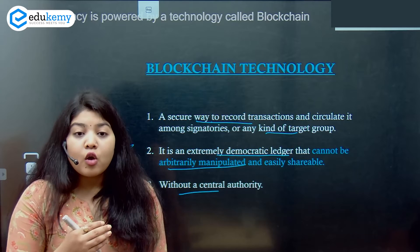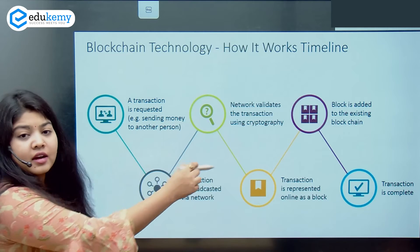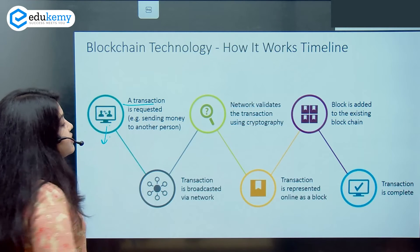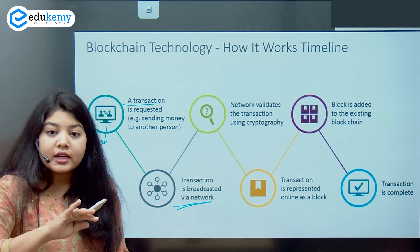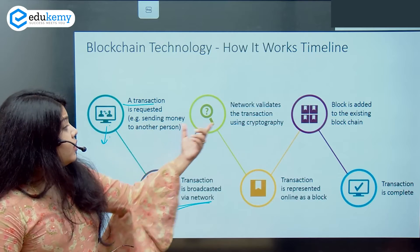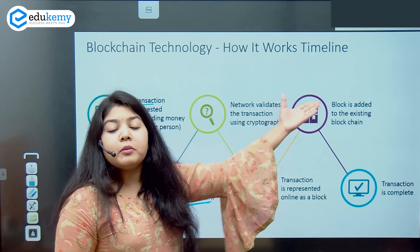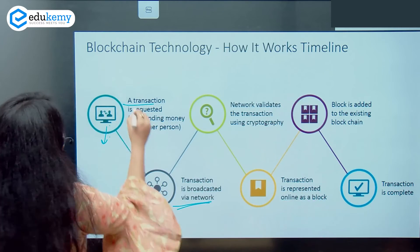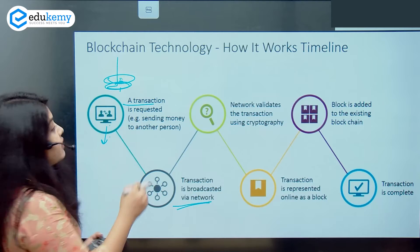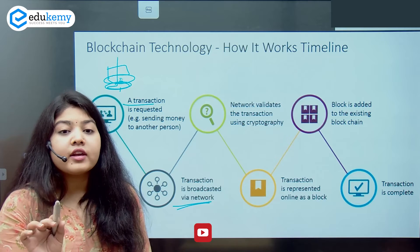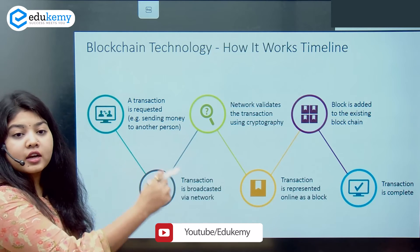With these features, blockchain technology offers a whole new range of services and is now being adopted by various governments. Briefly, let us understand how it works: a transaction is requested — for example, sending money to someone. This transaction request is broadcasted via the network, so the entire network knows it is being requested. The network validates the transaction, which is then represented as a block. This block is added to the existing chain, and the transaction is complete. Each block is linked one after the other, and once a transaction is done, no alteration is possible — meaning very limited possibility of fraud or manipulation.